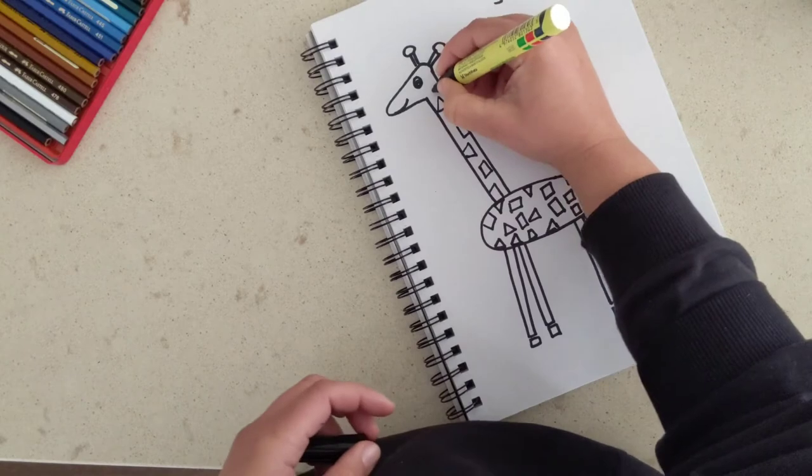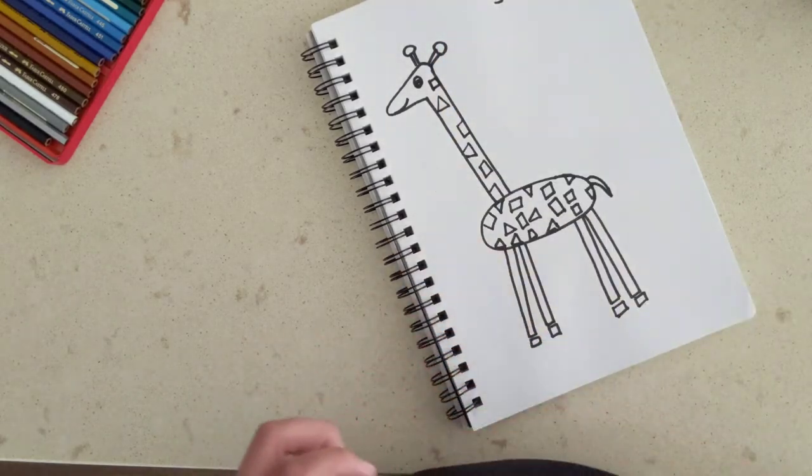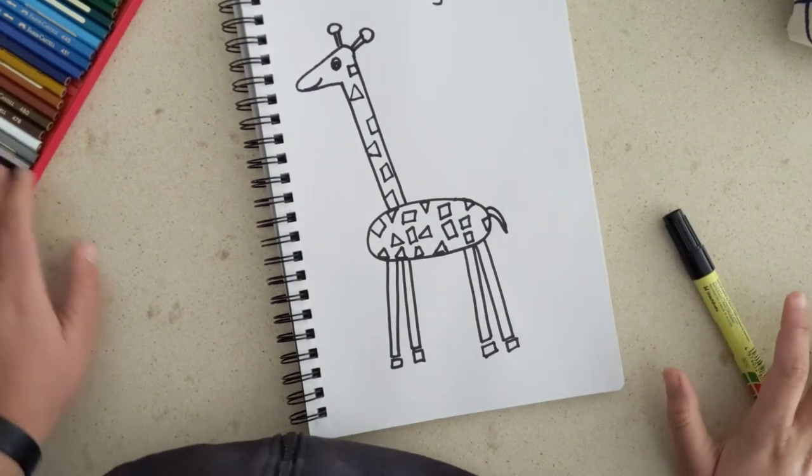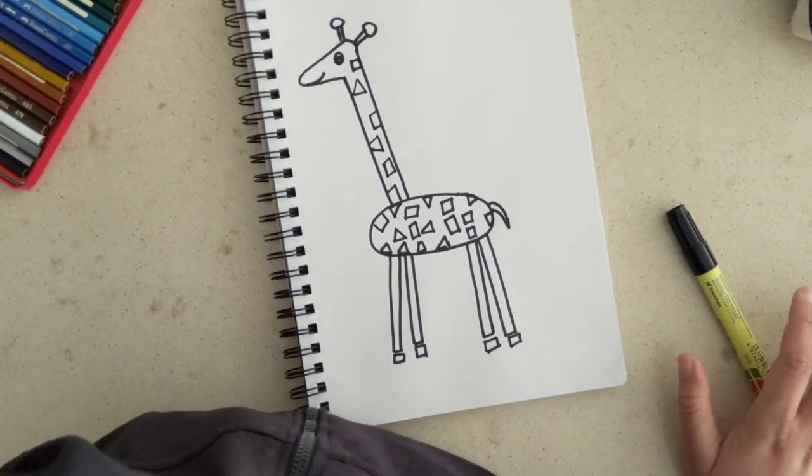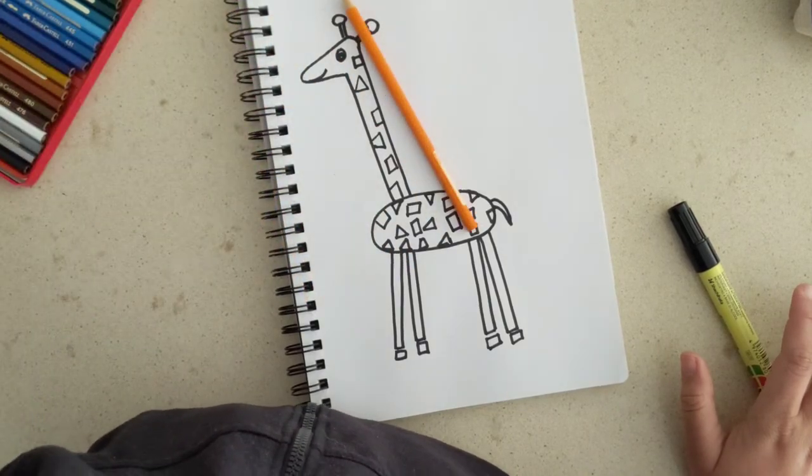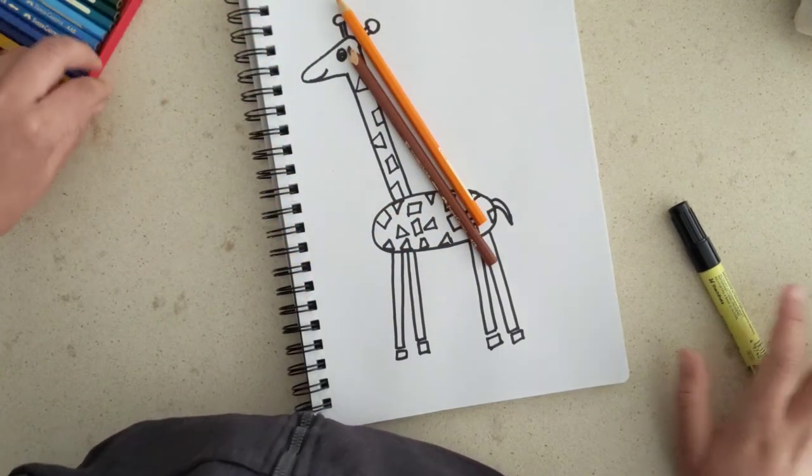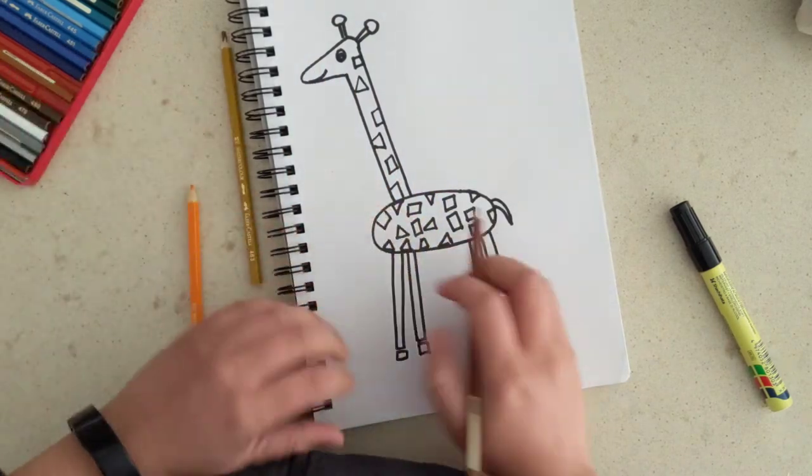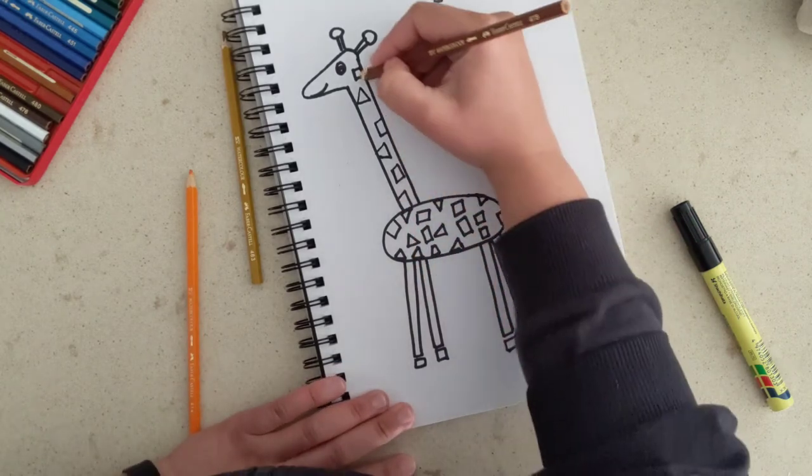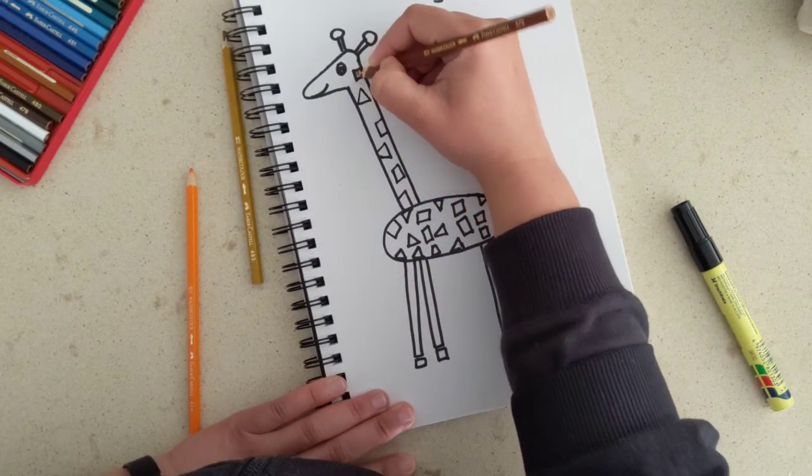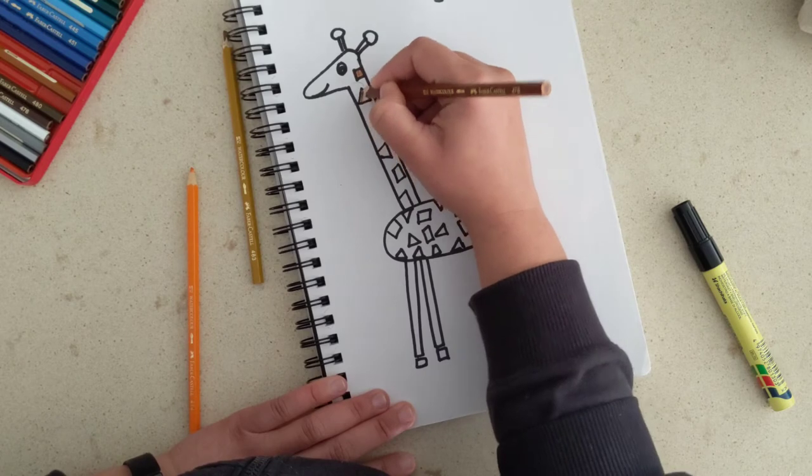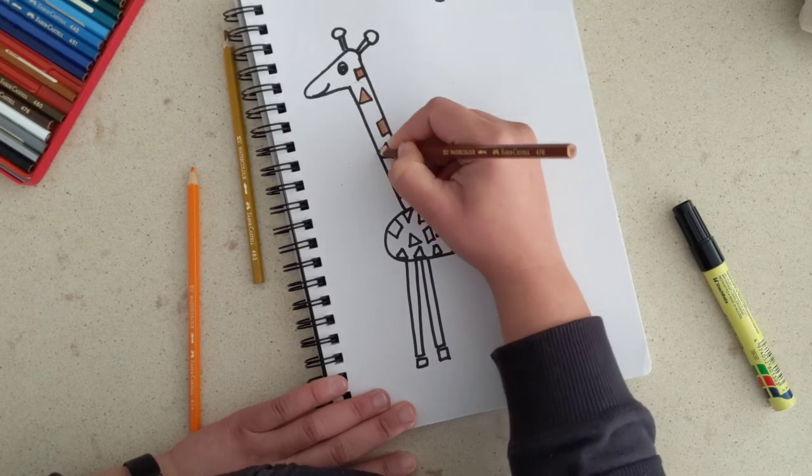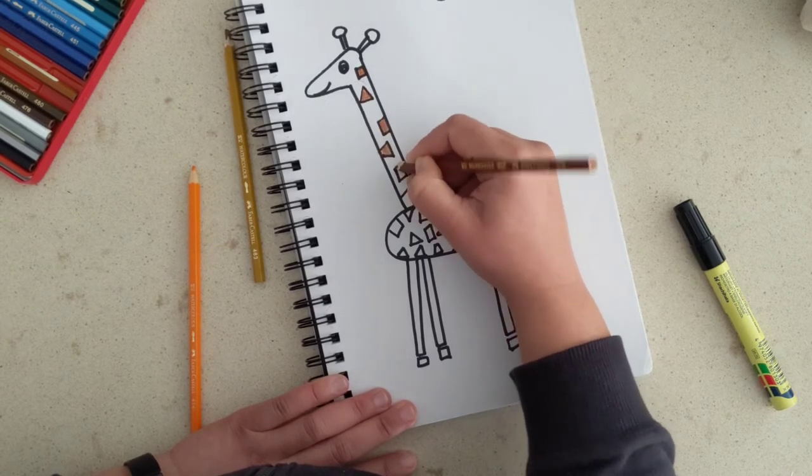That's it. So we have made these markings on the giraffe. Let's start to color the giraffe. You need very few colors. Let's take orange and let's take brown. Perfect. I am going to color these patches, just inside these squares. I am using brown.